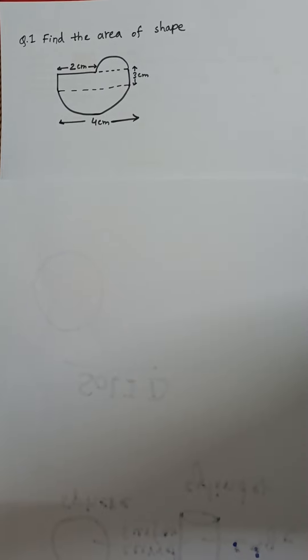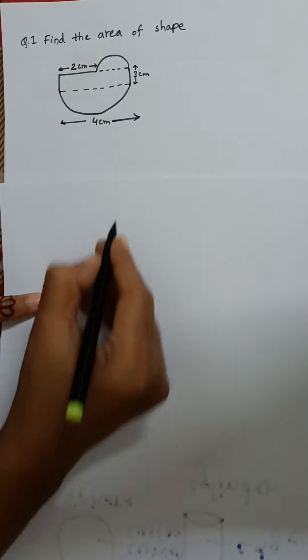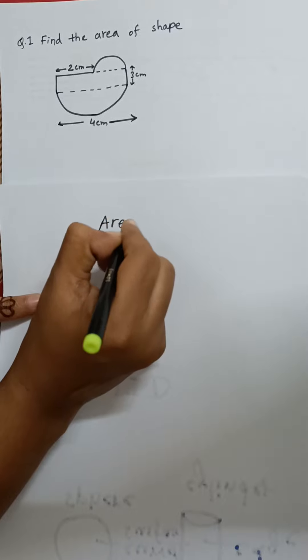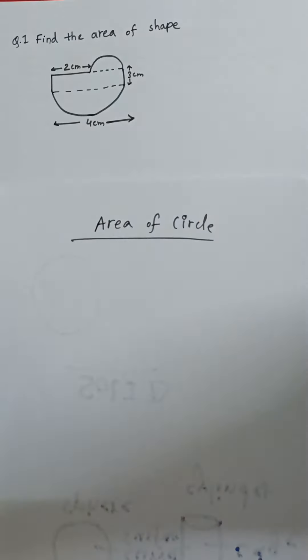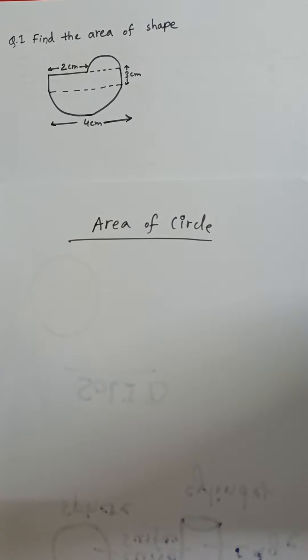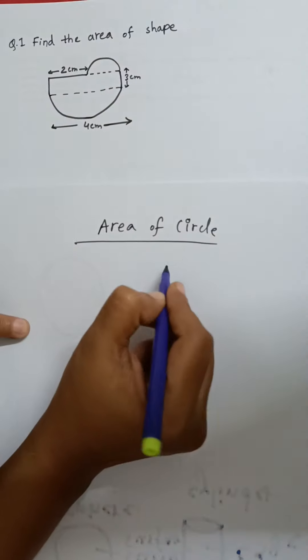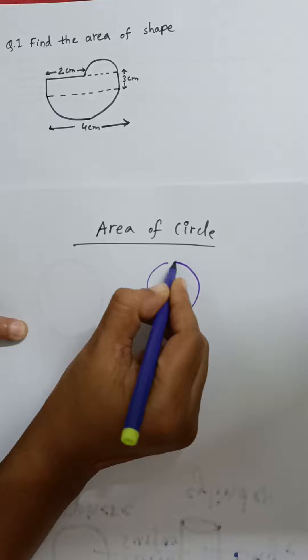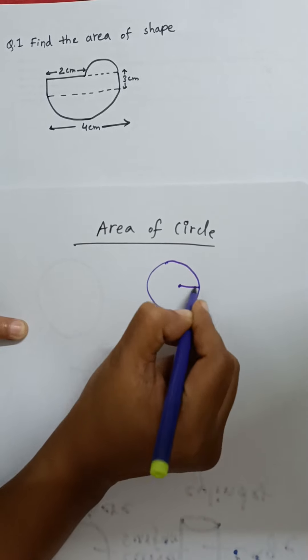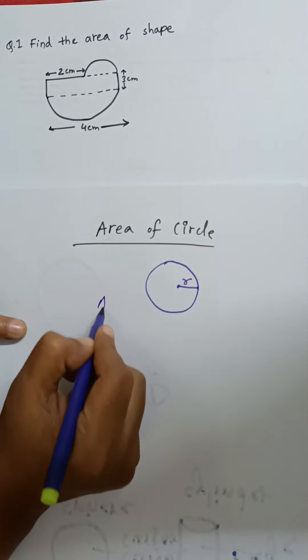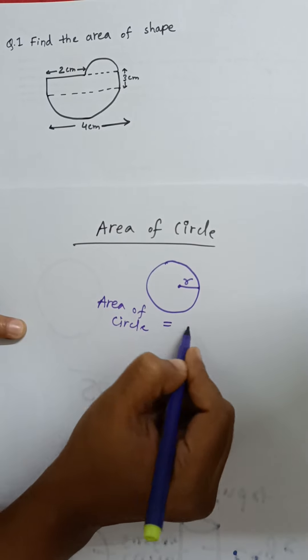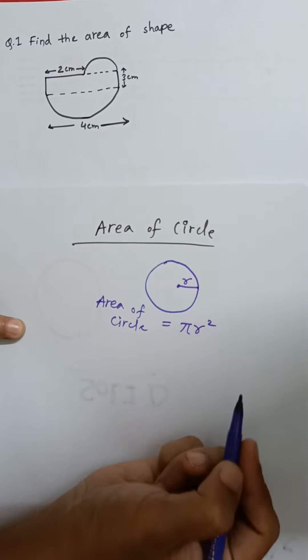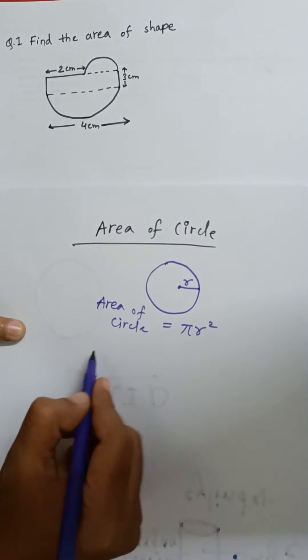Welcome dear students, so in today's session we will see about area of a circle. As we all know, the area of a circle formula is pi r square. Suppose this is a circle with a radius r, then we can write down area of a circle as pi r square.